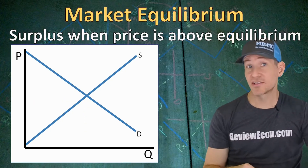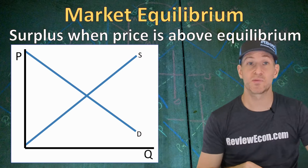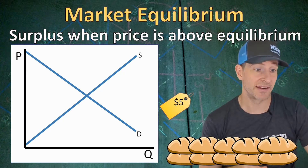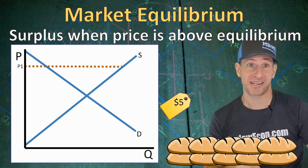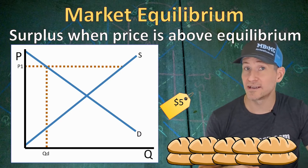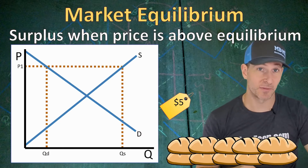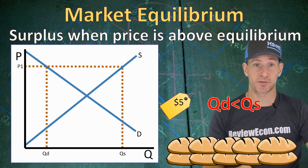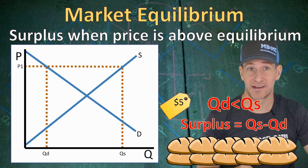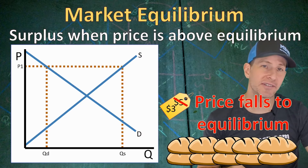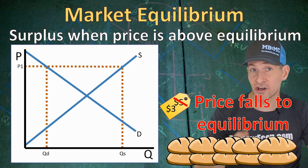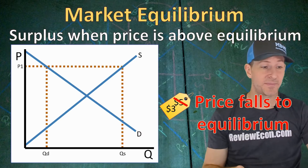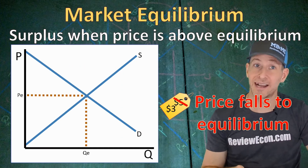Price isn't always at equilibrium. Sometimes it can be above equilibrium, and when that happens we have a surplus. Let's say a baker makes loaves of bread and charges five dollars. If that price is above equilibrium, labeled P1, then we have a low quantity demanded and a high quantity supplied. We call that a surplus because a surplus exists whenever the quantity demanded is less than the quantity supplied. The amount of the surplus is quantity supplied minus quantity demanded. When we have a surplus, prices will eventually fall towards equilibrium — fewer loaves will be made and more will be purchased by consumers.